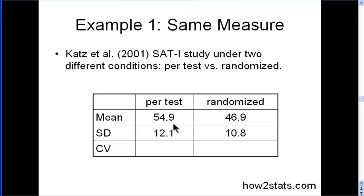So, to control for the differences in the means, you divide 12 by 54, and you get a value, and you multiply by 100, and you get a value of 22. So, the standard deviation is 22% of the mean. And in the randomized condition, it's 23%. So, two values that are actually quite similar.